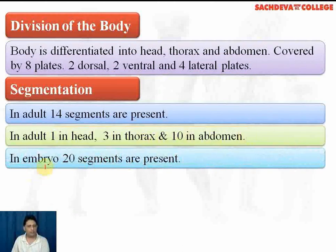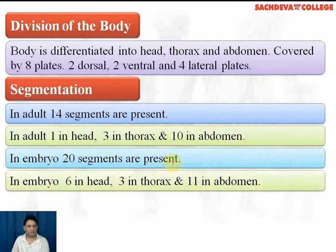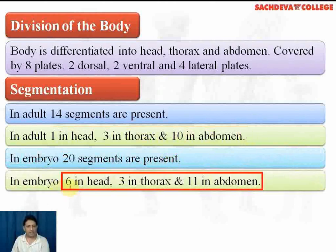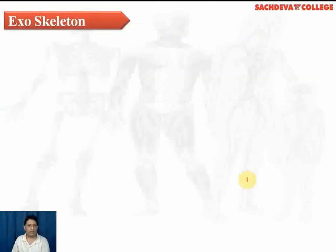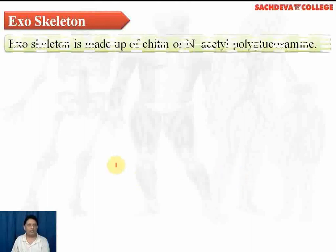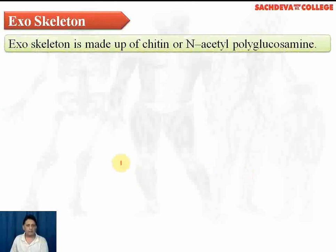In the embryo, 20 segments are present: 6 in the head, 3 in the thorax, and 11 in the abdomen. So most of the segments in the head fuse together in the adult form.